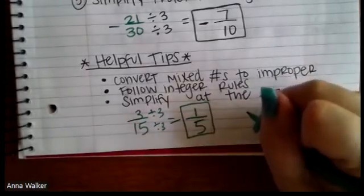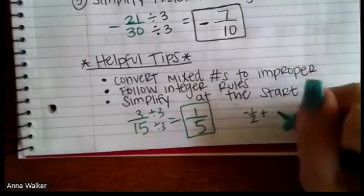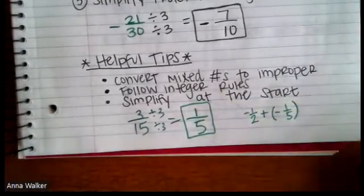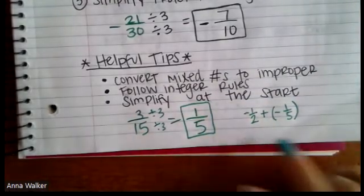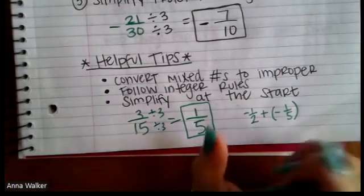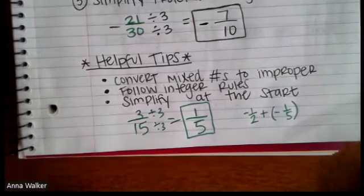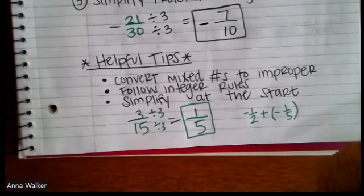So we could have simplified at the start of that other problem. And then the new problem would have been negative one-half plus negative one-fifth. The answer would still end up being the same, but we would work with smaller numbers then, instead of a bigger number like 15. So if you could simplify at the start, I would encourage you to do that.